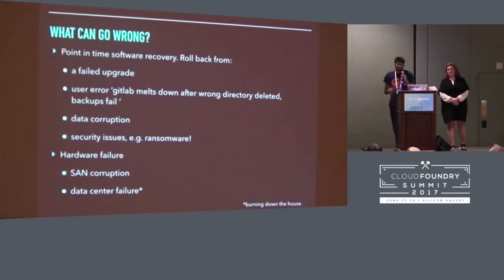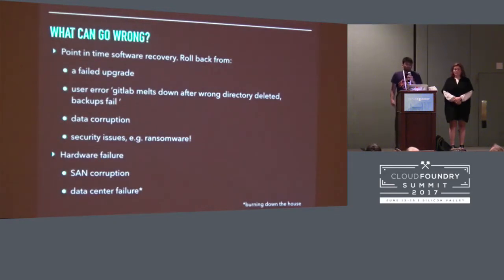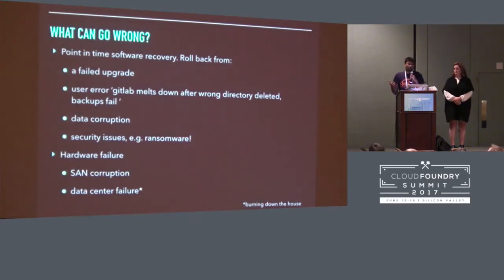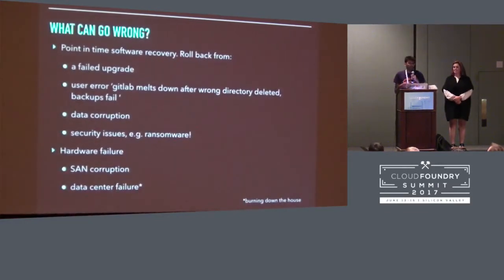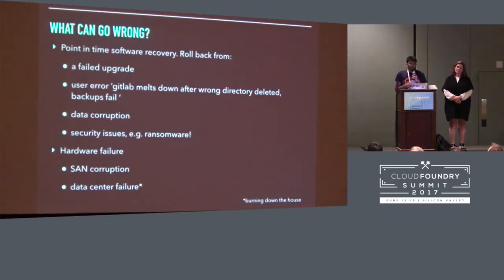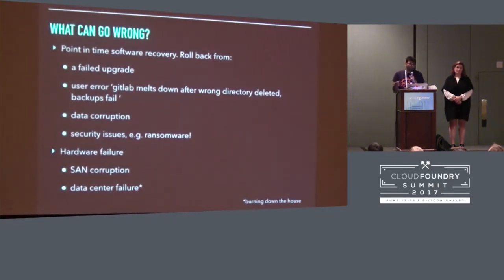So what can go wrong? What are people planning for? There can be things like recovering from a failed upgrade, where your upgrade has left your Foundry in a bad place and you want to go back to a point in time. It can be things like user errors, in which an administrator accidentally deletes critical information. An example of that is the GitLab meltdown, in which requests could not be served because parts of the needed data were accidentally deleted. There can be issues like data corruptions. And nowadays there are security vectors like ransomware, which can affect applications. By the way, the easiest fix for a ransomware situation is to do a repave and put your data back.